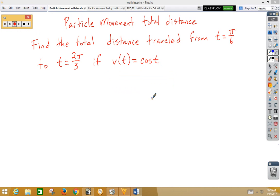In this video, we're going to do particle movement with total distance. In our first example, we have find the total distance traveled from t = π/6 to t = 2π/3 if the velocity function is cosine t.